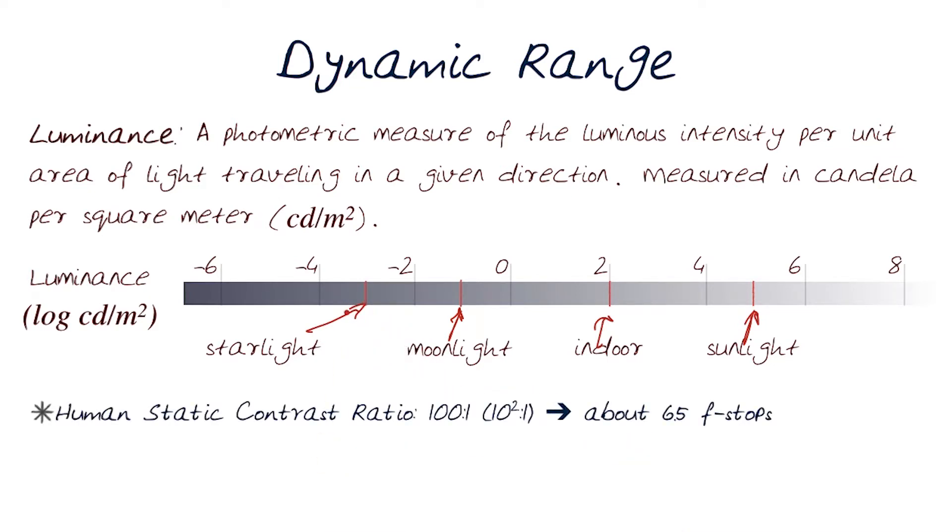Now, one thing to note, the human vision system can measure static contrast ratio. That is, being able to see the range at any moment when I'm looking at a scene, from 100 to 1. So 10 raised to 2 to 1. The human eye in a static case can also adjust itself by about 6.5 f-stops.